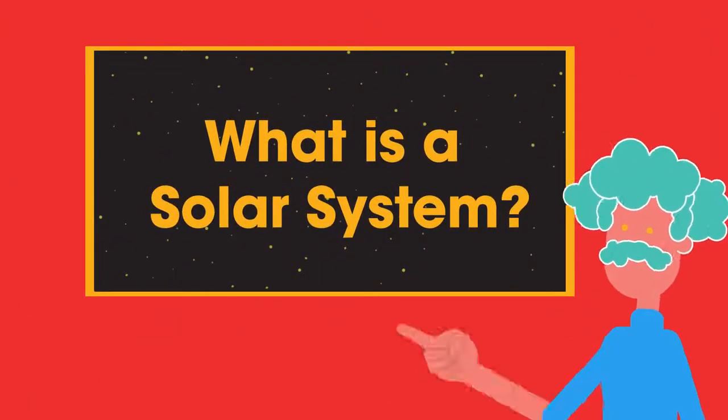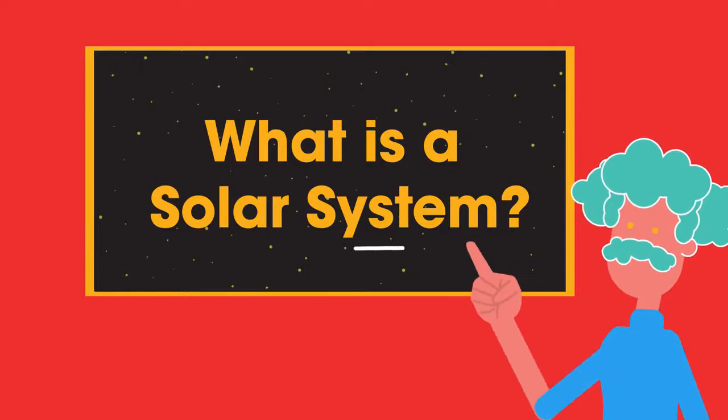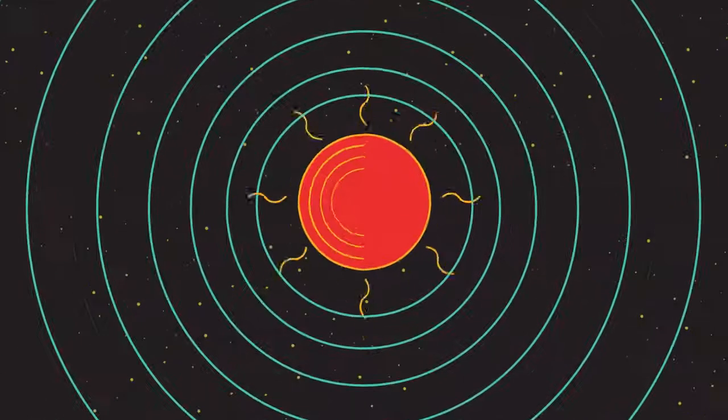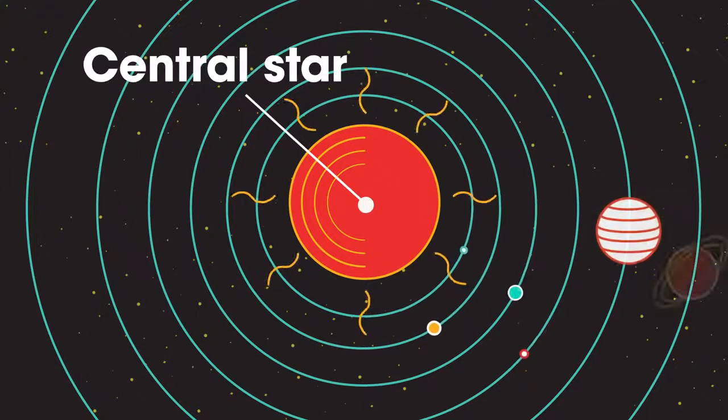In this video we will begin to look at some of the key features that describe the parts of our solar system. Quite simply, it's the name given to the collection of planets and other bodies that orbit a star.